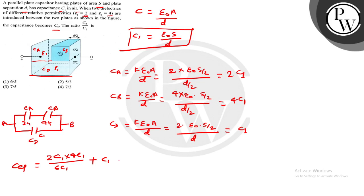Plus parallel with C1, so we add C1. This will be 8C1 divided by 6C1 plus C1. So here we have our answer: 4 by 3 plus C1, that is 7 by 3 C1. So C2 over C1 equals 7 by 3. The fourth option is the correct answer.